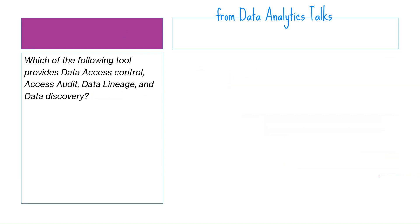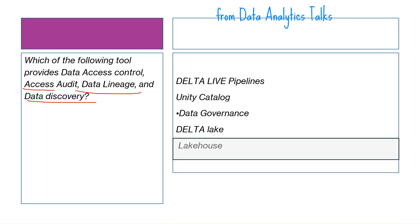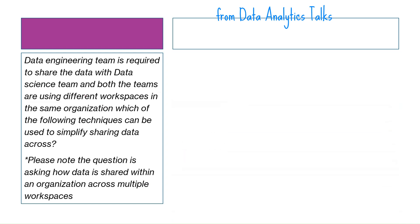Scenario eleven: which of the following tools provides data access control, data lineage, and data discovery? The options are Delta Live Table pipeline, Unity Catalog, data governance, Delta Lake, and Lakehouse. The correct answer is Unity Catalog.